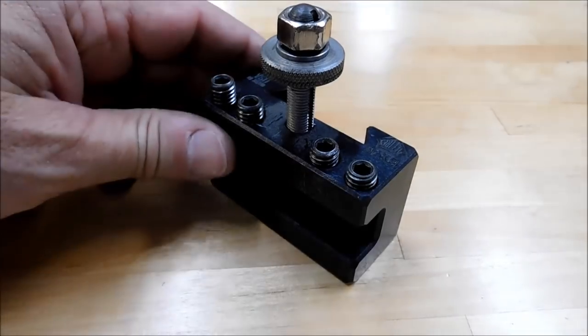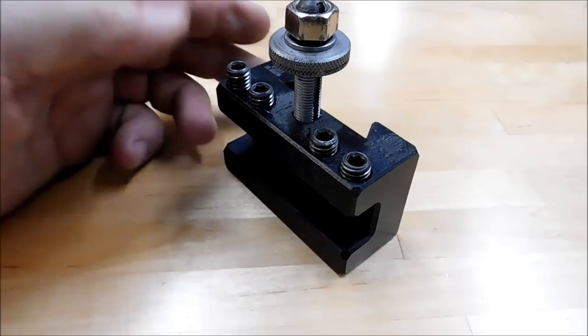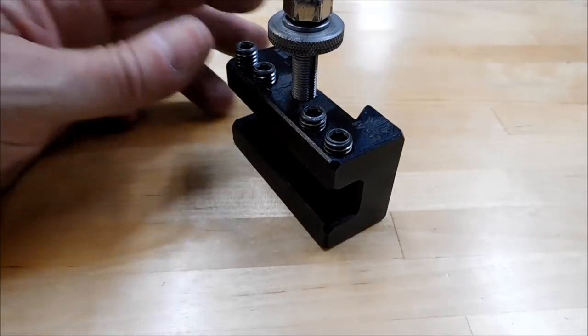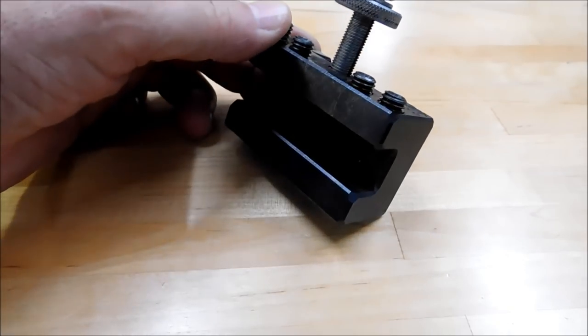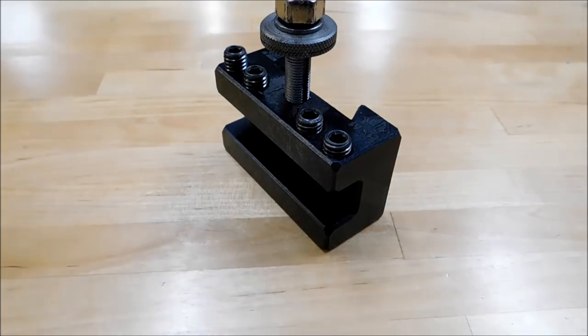Okay guys, well this is the video that's for all you guys that have always said my tailstock is so worn out that it's just never going to happen. I can't drill a straight hole. I can't get it on center. Well, if you have a machine that spins and you have a carriage that moves, there is no reason you can't drill a hole. Just move the drill to the tool post.